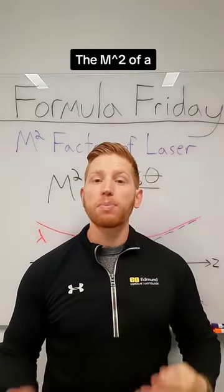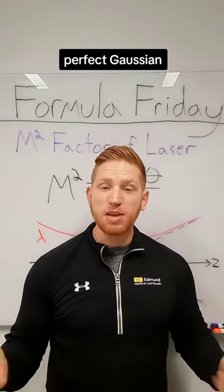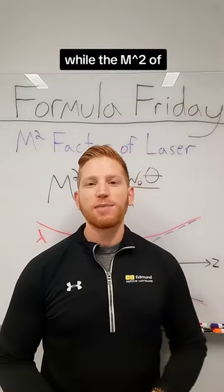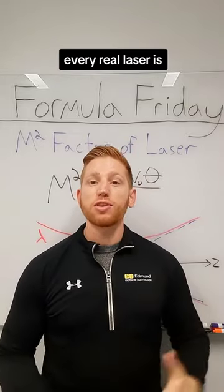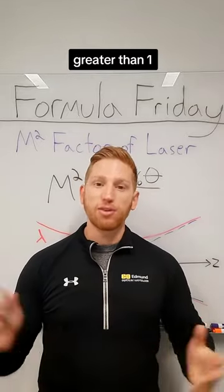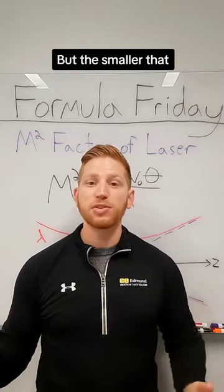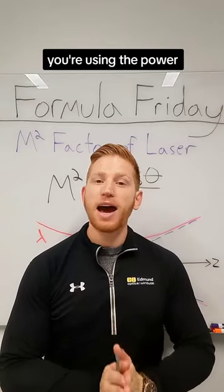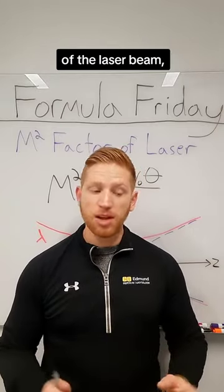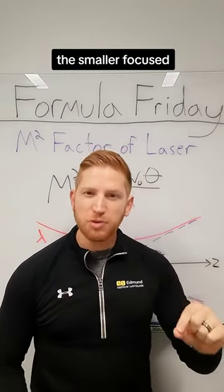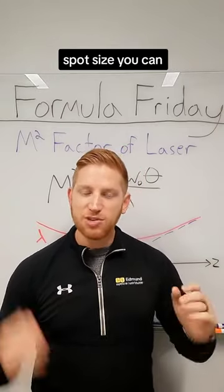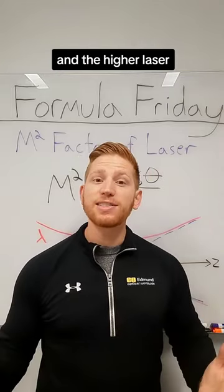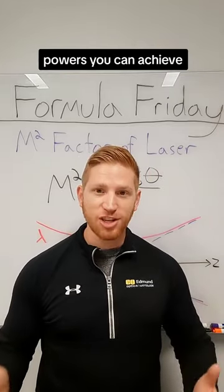The M-squared of a perfect Gaussian beam would be 1, while the M-squared of every real laser is greater than 1. But the smaller that value, the more efficiently you're using the power of the laser beam, the smaller focus spot size you can get with the laser, and the higher laser powers you can achieve.